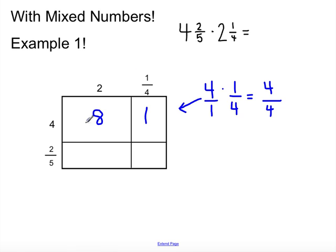Then, I'll change to a different color. I'm going to do 2 fifths times 2. And I'm going to, again, remember that 2 wholes can be written as 2 over 1. So, it's going to be 2 over 1 times 2 fifths. And that is equal to 4 fifths. So, that's going to go here.